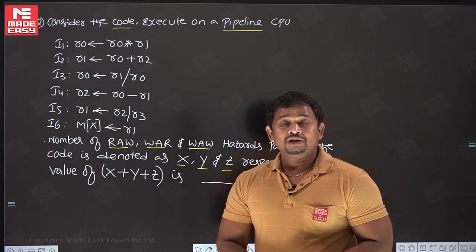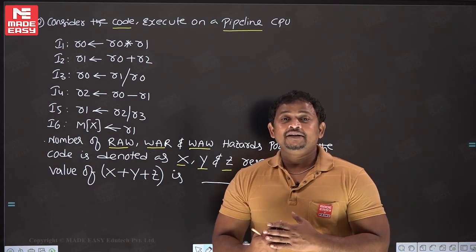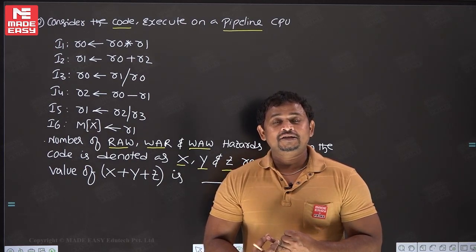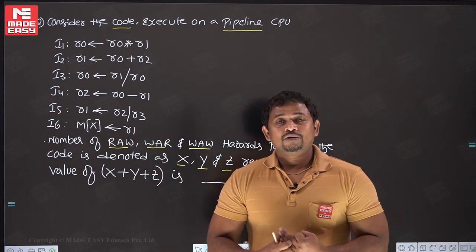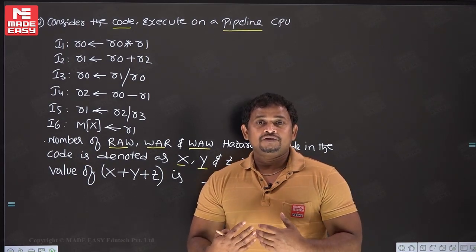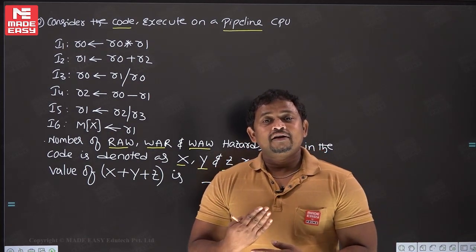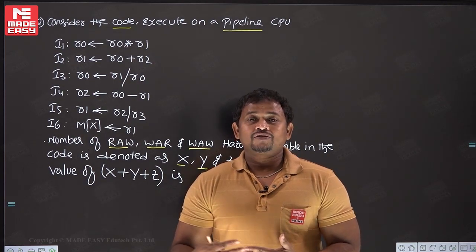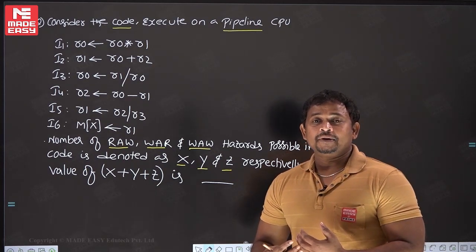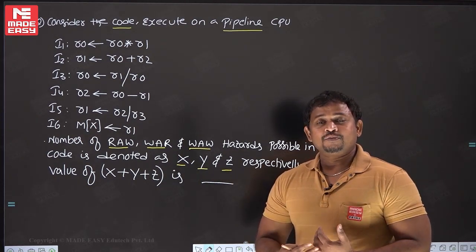To answer this question, you should first know the dependency conditions in the pipeline. Data dependency conditions are classified into three types: true data dependency, anti-data dependency, and output data dependency. Based on these dependencies, a stall is possible in the pipeline. After understanding the concepts of dependencies, we will come back to the question and calculate the total number of hazards possible in the given code.